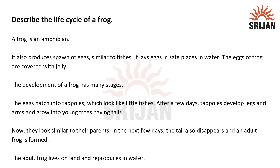The question is: describe the life cycle of a frog. A frog is an amphibian, which means that it can live on land as well as in water. It requires water for the process of reproduction.